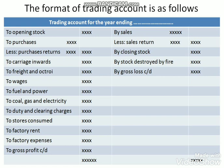On the credit side of the trading account, we have sales, including both cash sales and credit sales. In case there are sales returns, they are deducted from sales. Next on the credit side is closing stock.